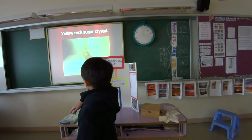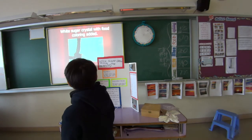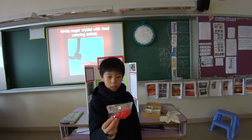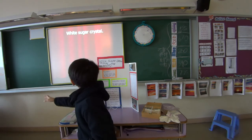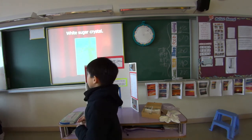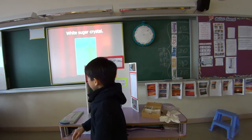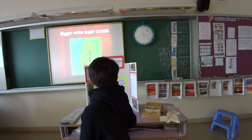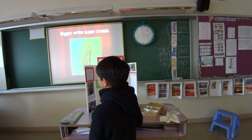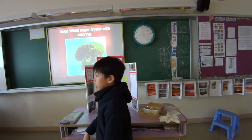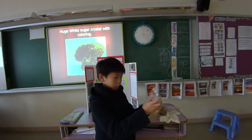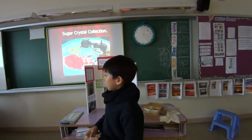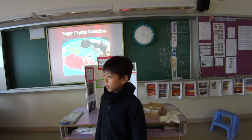And this is the yellow rock sugar. And this is the white sugar crystal with food coloring, and it will look like this. The white sugar crystal will look like this. And this is the yellow and white sugar crystal, and the yellow sugar crystal with food coloring. And if you have a lot of sugar crystals at room temperature, it will look like this — it will be a collection.